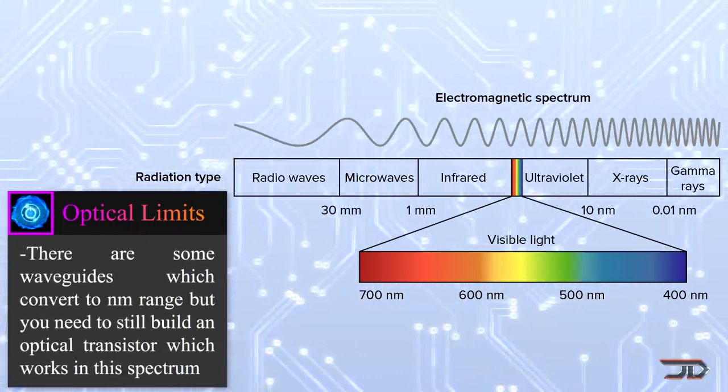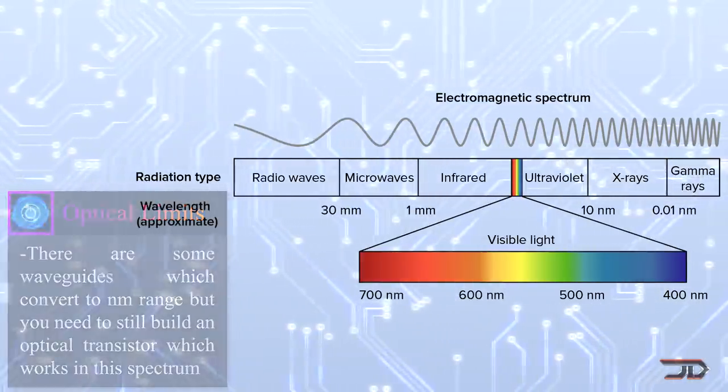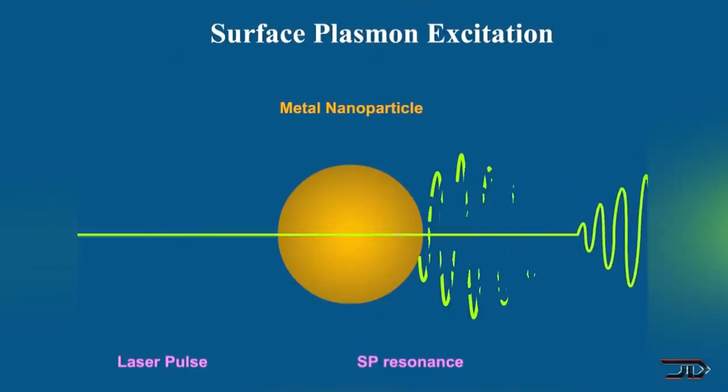However, there is an interesting thing called the surface plasmon. These are particles that can be excited on the surface of materials. They can travel like a photon, and hence they are faster than a typical silicon computer. But more importantly, it's more efficient than its silicon counterpart.